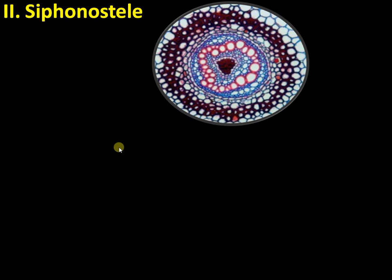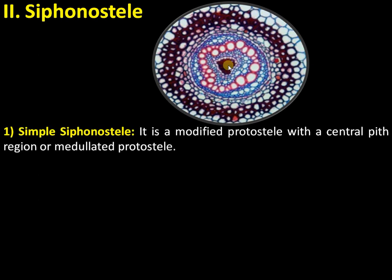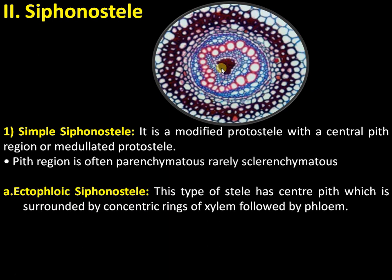The second major type of stele is the siphonostele. The siphonostele is just like a protostele but with a central pith that may be sclerenchymatous or parenchymatous — it is simply a medullated protostele. There are two types: ectophloic siphonostele, where phloem is present on the outer side of the xylem ring.